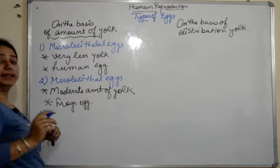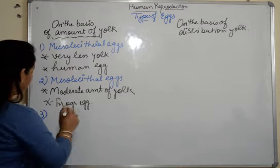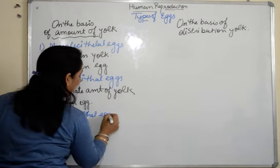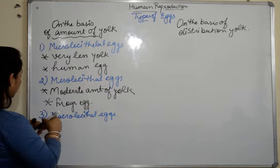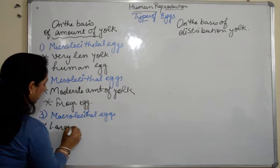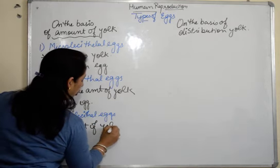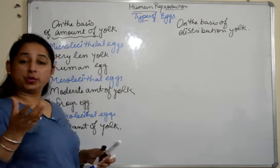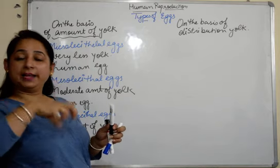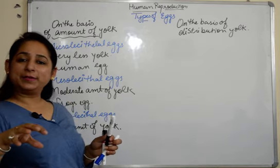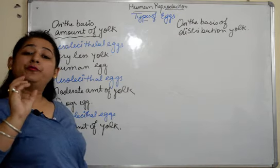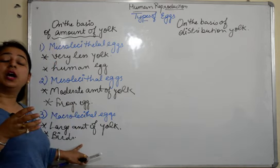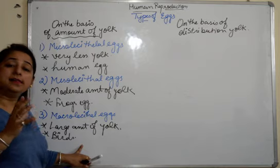The third category is macro lecithal. Macro lecithal eggs are the eggs which have a large amount of yolk, and the example is found in birds. The egg is incubated by the hen and finally a fully grown chick hatches out, meaning the whole nourishment has to be provided by the yolk, so the amount of yolk present is very large.